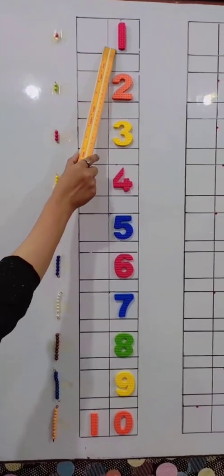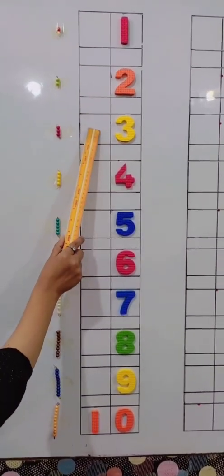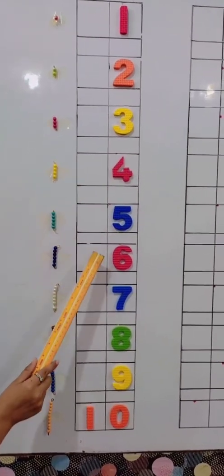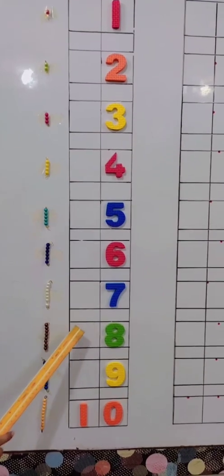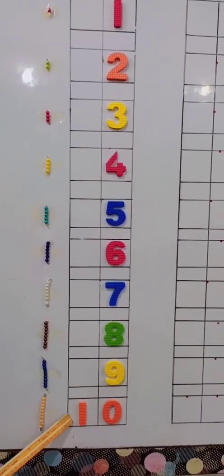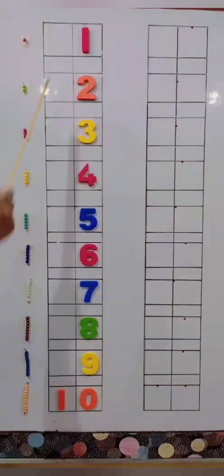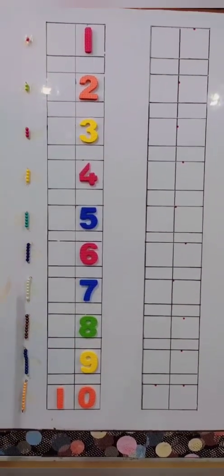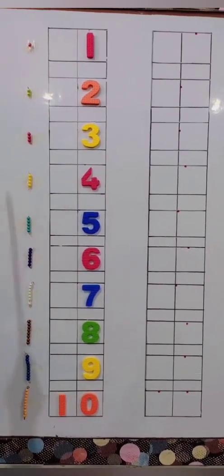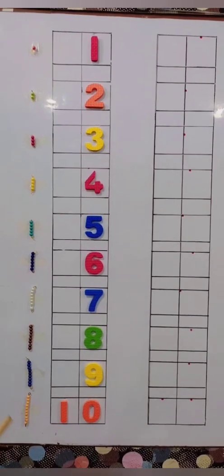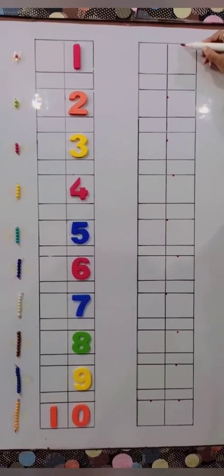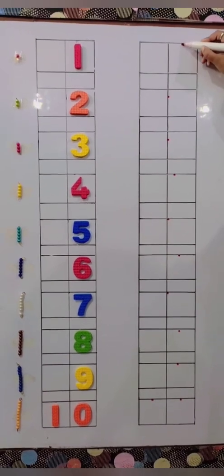1, 2, 3, 4, 5, 6, 7, 8, 9, 10. Okay, now we are going to write our numbers from 1 to 10 with proper formation. Let's start with me. Put your pencil on the dot and write with me.